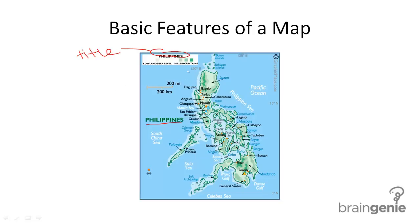Next is the scale. Here's our scale right here, and it shows us that this distance on the map is equal to 200 kilometers. Now let's look for the compass — it's down here, and it tells us that north is up.